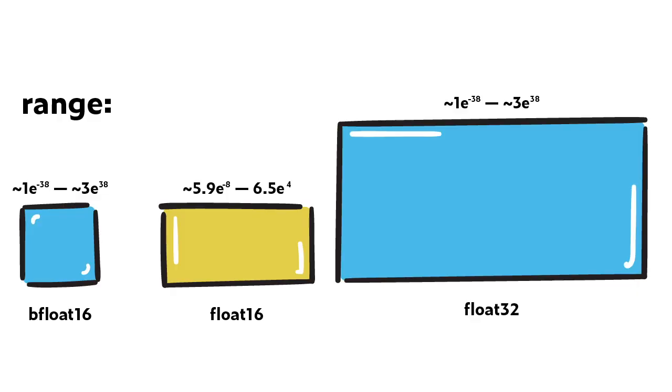What's also great about a bfloat16 multiplier is its physical size. The bfloat16 is about half the size of a float16 multiplier and almost one eighth the size of a float32 multiplier. This means we can fit more bfloat16 multipliers in the same amount of space — similar to what we saw with our systolic array, where increasing the density increases the speed. And when we increase computational speed, the end result is that we're reducing the training time for any of our given deep learning models.